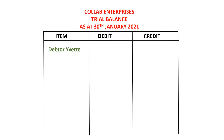So that is how our trial balance will look like. In the column for item, we shall put the names of the ledger accounts. In this case, we are putting Data Yvette. We said it has a debit balance because the debit side is bigger than the credit side, and so that's why we put that balance right there as 324,000.